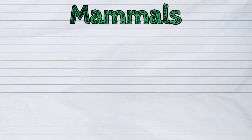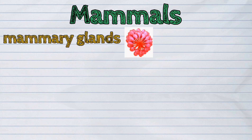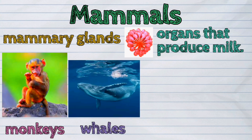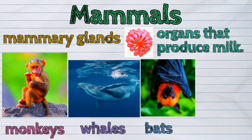And the last example of vertebrates are the mammals. They are the only group of animals with mammary glands, which are the organs that produce milk. Examples are the monkeys, whales, and bats. Most mammals give birth to live young, like humans, but some lay eggs like the platypuses.